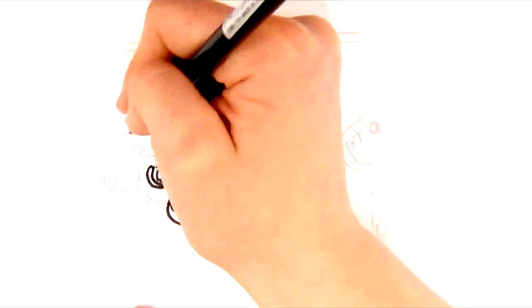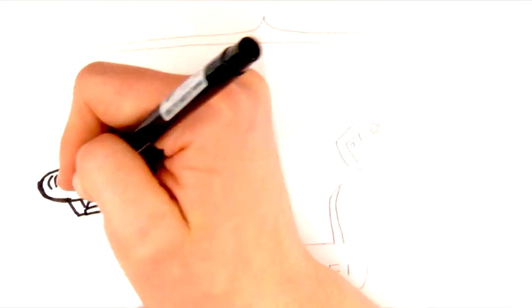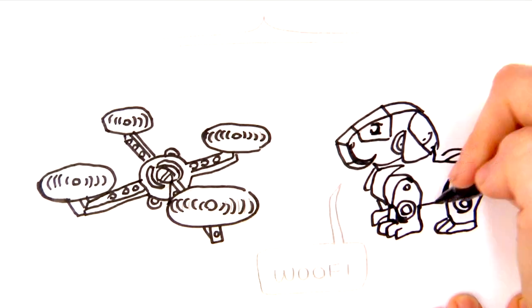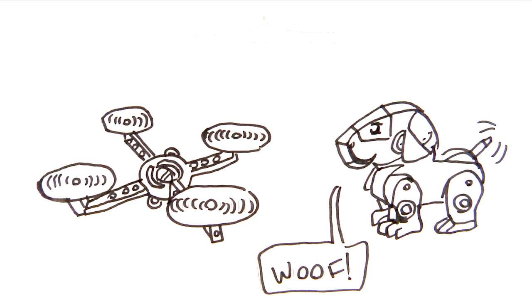But the word robot also describes Roomba vacuum cleaners, machines used on assembly lines and manufacturing, military drones, and toys like Aibo the Robotic Dog.